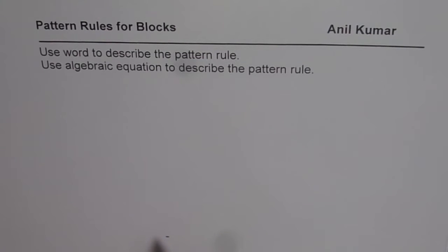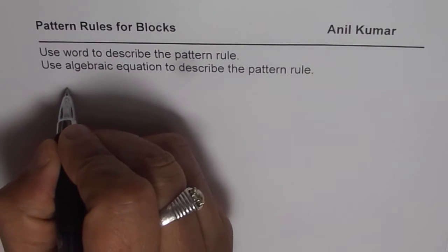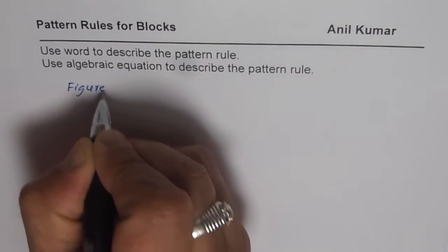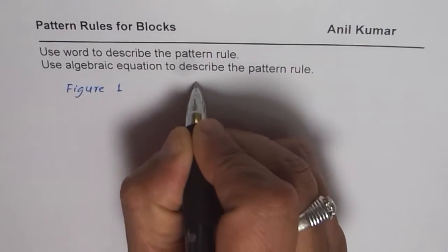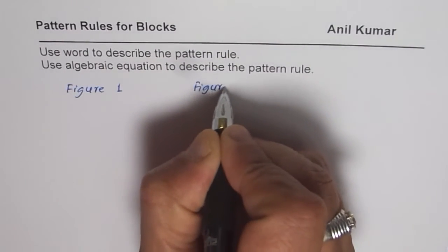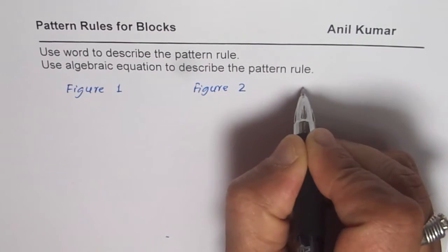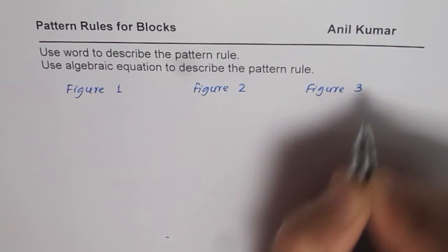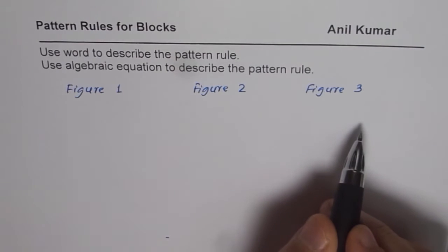So here what I will do is I will write a few figure numbers. We'll have patterns and I'll make three figures. I'll say figure number one, figure number two and figure number three. Using blocks I'll make three different figures.